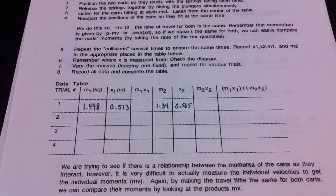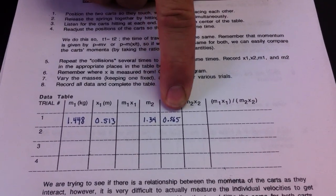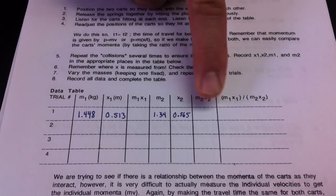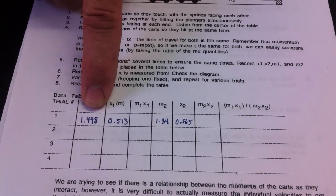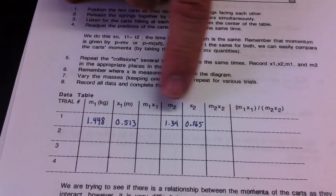So when you take the mass of cart two times the distance that it went, that's what you're going to record right here. And then for mass one, you're going to take its mass times its distance that it traveled and record that in these two columns. And Mr. Laurent's doing that right now.